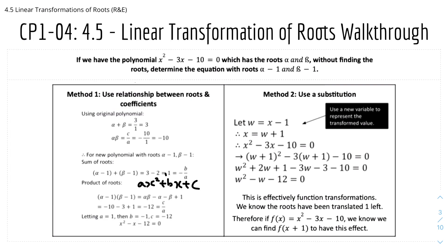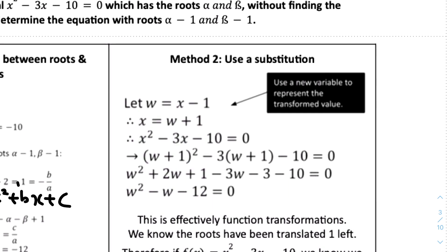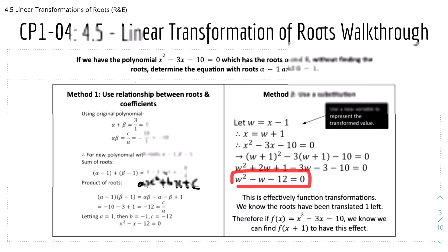A more useful method is substitution. We let W represent the new roots, so W = x - 1, since x is the original variable. Rearranging gives x = W + 1. We substitute x = W + 1 into the original equation to get (W + 1)² - 3(W + 1) - 10 = 0. Expanding everything gives W² - W - 12 = 0, which matches our earlier answer.